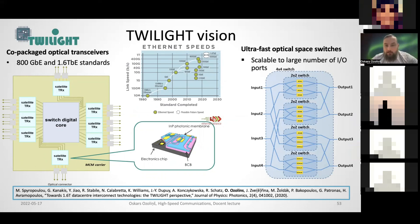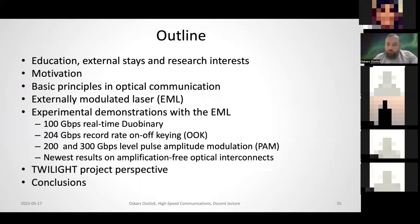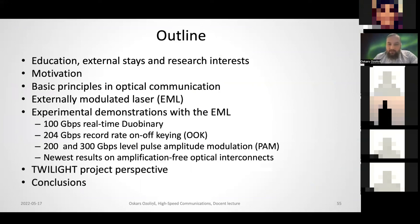Coming back to the EML: currently it's a single-channel packaged device. In the Twilight project, we want to integrate several of these devices to reach 1.6 Tb/s — for example, 200 Gb/s per wavelength with a number of devices integrated side by side. Hopefully we'll see arrays of externally modulated lasers running at 1.6 Tb/s in the near future. The conclusions are quite technical, so I'll leave them on the slide — thank you for your attention, and I leave some space for questions.